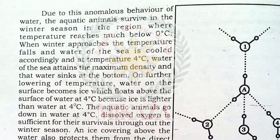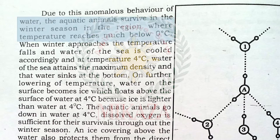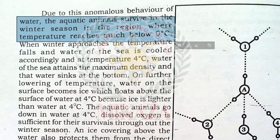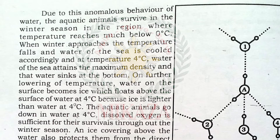Because of this anomalous behavior — water not following the normal law of contraction and expansion between 0 and 4 degrees Celsius — aquatic animals can survive in water during winter. As temperature falls, water in a lake is cooled, and at 4 degrees Celsius the water attains its maximum density and sinks.